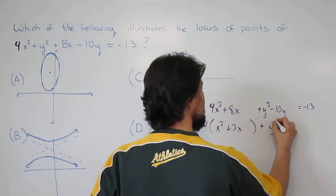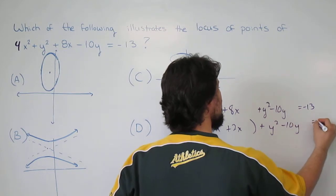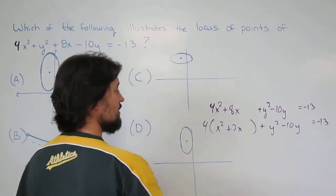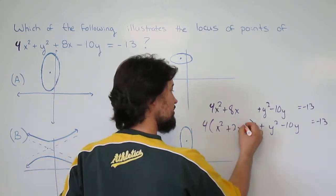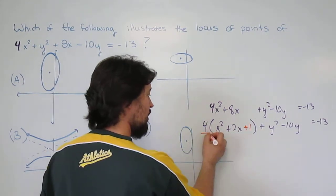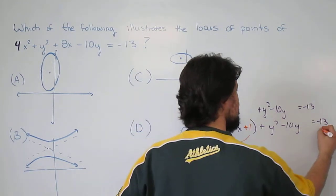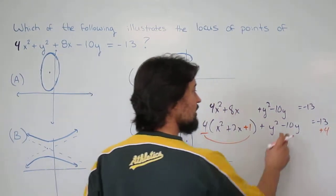2x left only. Take this number, divide by 2, that's 1, then square it. So I add 1, but I didn't really add 1, I really added 4 times the 1, so plus 4.